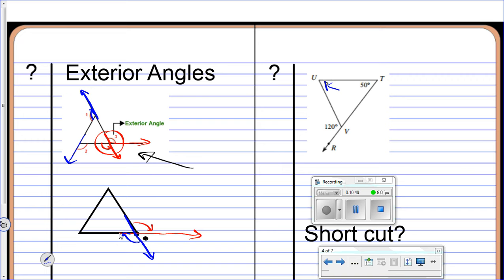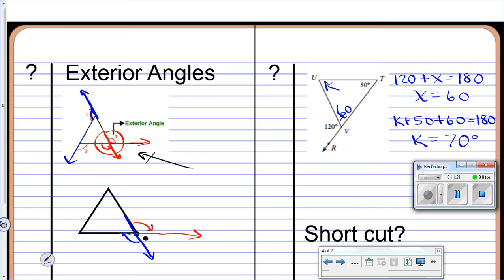So, I know this one we'll call X is found by 120 plus X equals 180. If you're a linear pair, X is equal to 60. Now, let's move that into this spot. So, now I know that K plus 50 plus 60 equals 180. I'm simply solving for K by adding the 50 and 60. I get 110. And that leaves me K to be the angle 70. Now, that's just using the information that we know about linear pair and things like that. But now I'm asking, is there a shortcut?